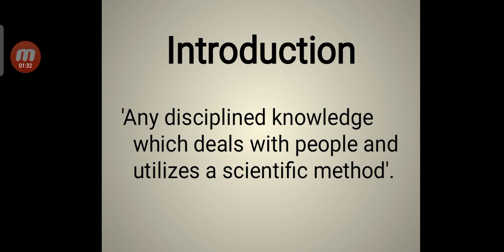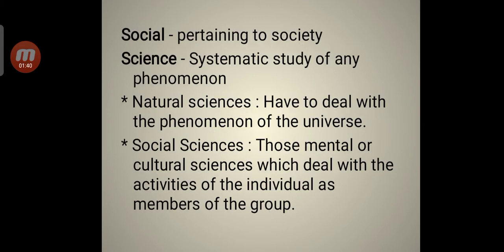Any disciplined knowledge which deals with people and utilizes a scientific method. Social means pertaining to society. Whatever we study related to society is called social. While science is a systematic study of any phenomena, natural sciences deal with the phenomena of the universe. Social sciences are those mental or cultural sciences which deal with the activities of the individual as members of the group.